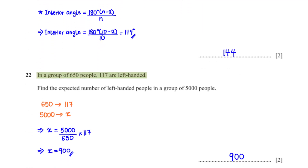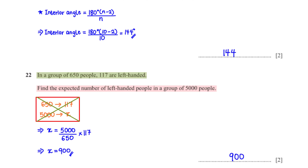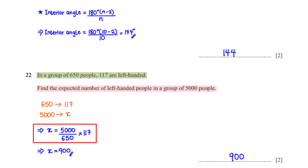In a group of 650 people, 117 are left-handed. Find the expected number of left-handed people in a group of 5000 people. Setting up the proportion: if 117 out of 650 are left-handed, then x out of 5000 are left-handed. Cross-multiplying and making x the subject gives 900.